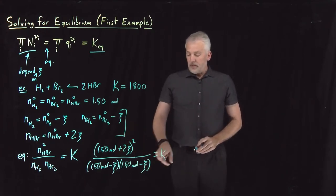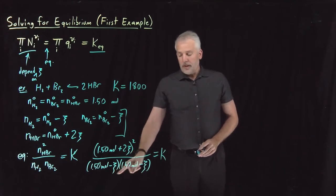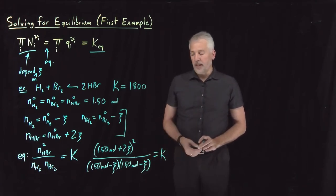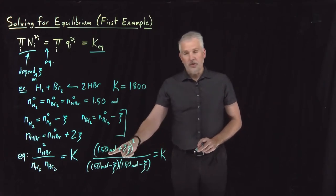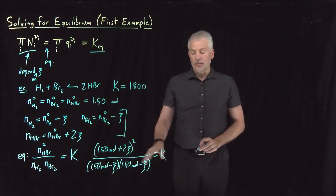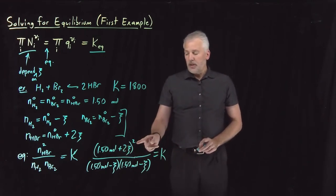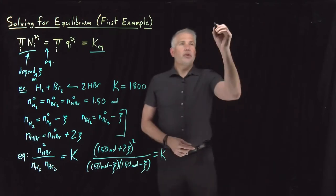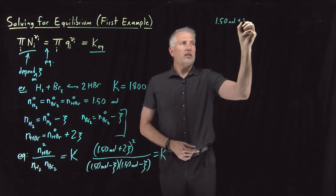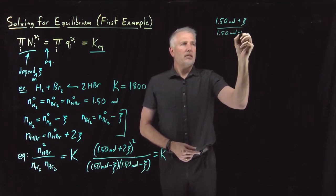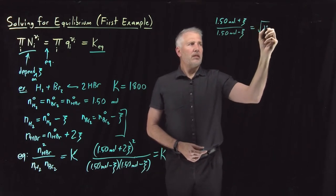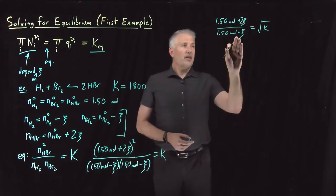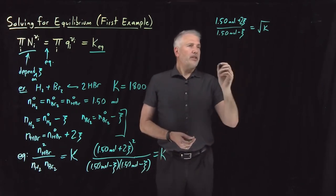I know the value of K and I'm solving for squiggle — just an algebraic expression. What we do from this point depends on the particular reaction. In this case, since I have something squared on top and conveniently the same quantity squared on the bottom, I can take the square root of both sides. That gives me (1.5 + 2ξ) / (1.5 − ξ) = √K.